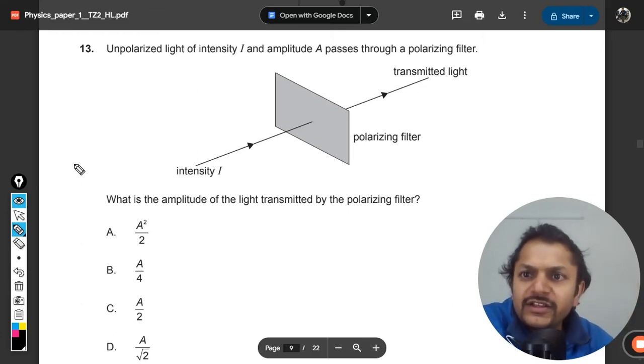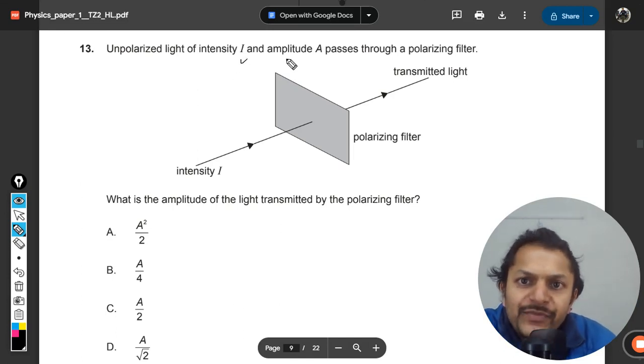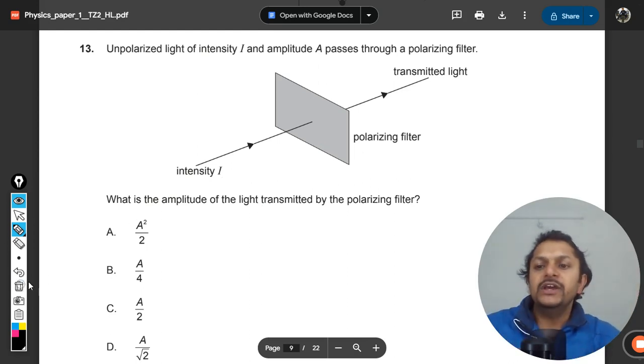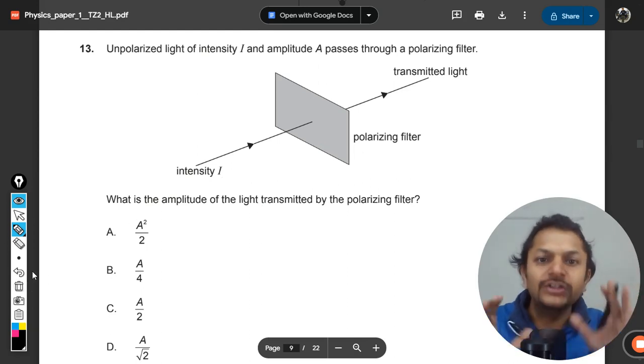Our curious student, let us see what is there in this question. Unpolarized light of intensity I and amplitude A passes through a polarizing filter. The intensity here is I and the amplitude is given as A. What is the amplitude of the light transmitted by the polarizing filter? Okay, so first of all it is a concept of polarization.